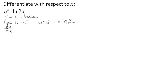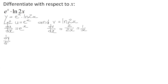According to the formula sheet, du/dx — formula number 12 — e^x remains e^x. For dv/dx, using formula number 11, k is 2, so it becomes 2 over 2x, which equals 1 over x.